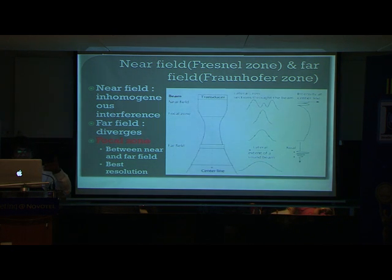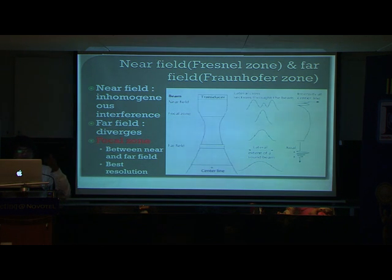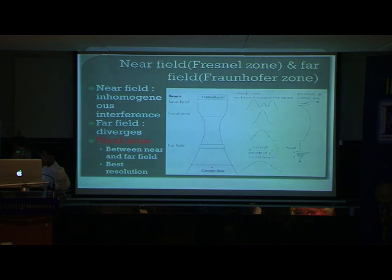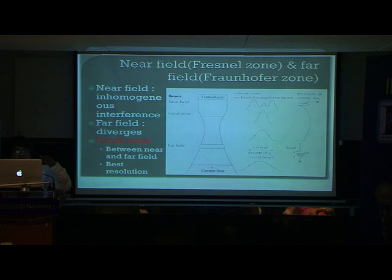When this frequency of sound is produced and goes inside the body, it creates various zones of image displayed on the screen. We have the near field, then the focal zone — where the best image quality is obtained — and the far field, where a slightly lesser quality image is obtained.